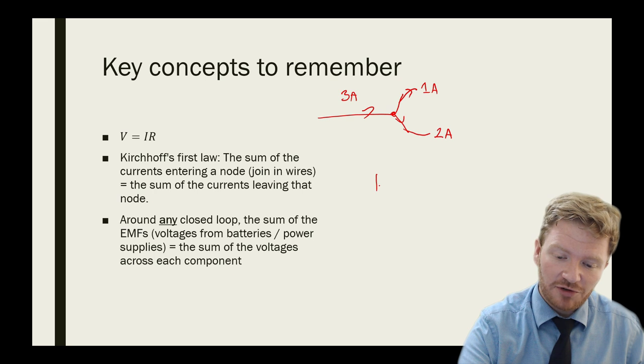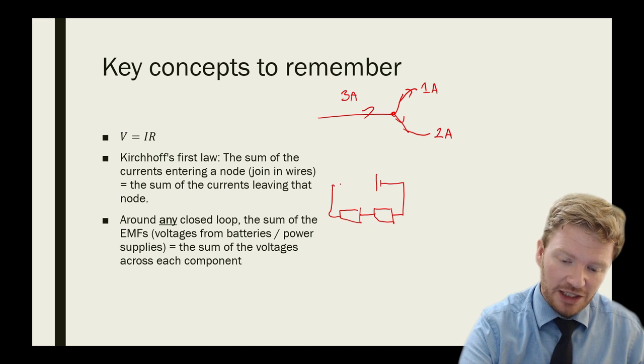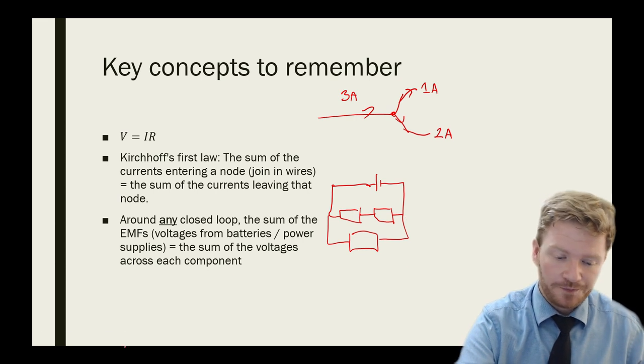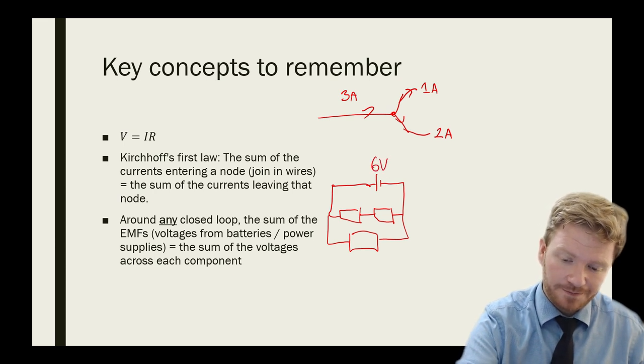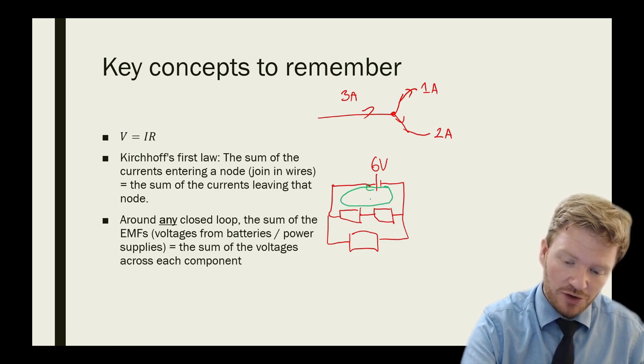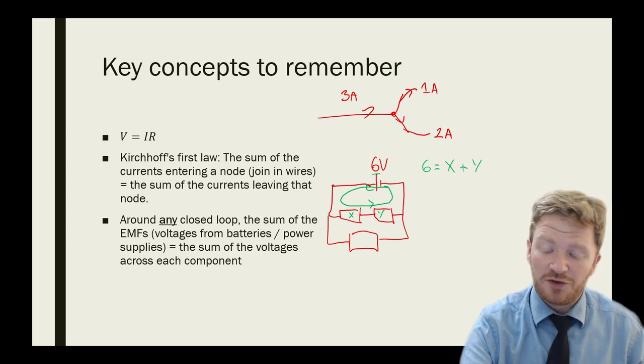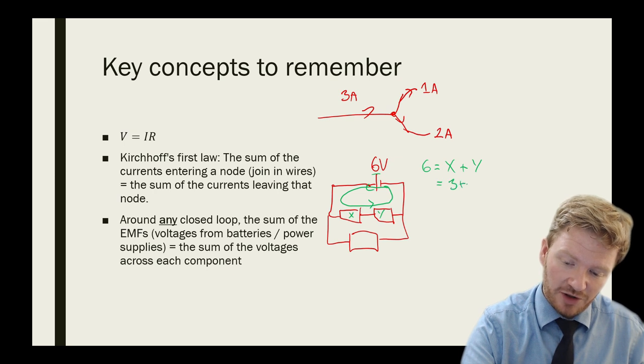The second thing to say is that around any closed loop in a circuit, the sum of all the EMFs, and remember EMFs are voltages from batteries or power supplies, is always equal to the sum of the voltages across the components. So let's say I have a six-volt battery here. I can pick any loop I like. In that case, I can say that my EMF is six. So I can say six is equal to, and if I call this X and Y, six must be equal to the voltage in X plus the voltage in Y.